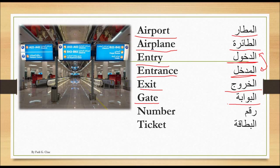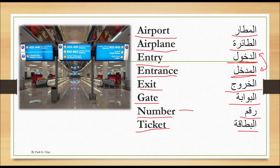Number is raqam, and ticket is al-bitaqa. So for example, if you want to say gate number five, you say al-bawwaba raqam khamsa — البوابة رقم خمسة.